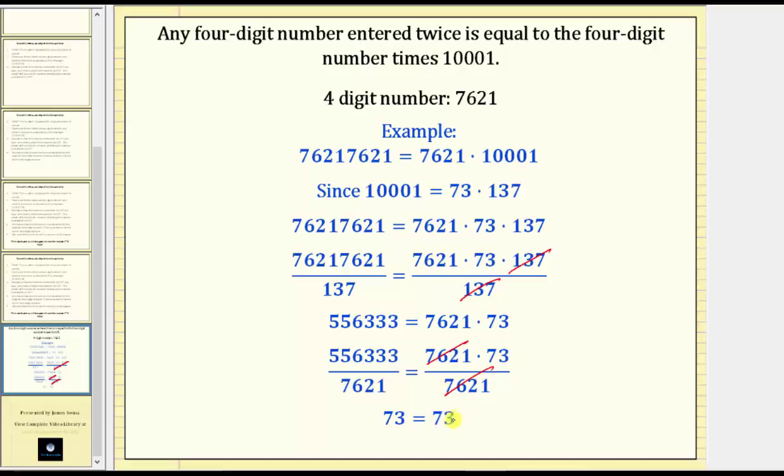So this is the reason why if we start with the four-digit number entered twice and then divide by 137 and then divide by the original four-digit number, the result will always be 73. Thank you for watching.